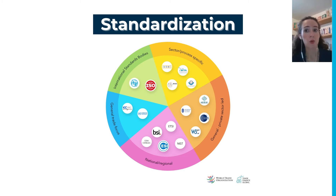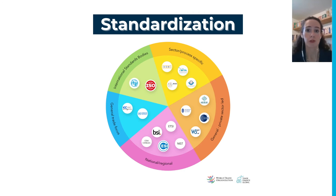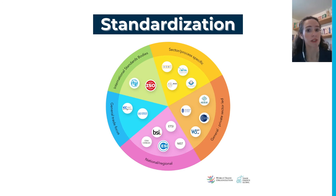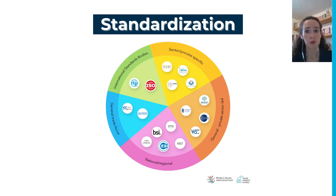A new section on standardization initiatives was also added in this year's publication. This section provides an overview of projects that work towards creating digital standards relevant for trade to drive digital interoperability. These standardization initiatives play a crucial role in shaping the future of trade digitalization. End-to-end trade digitalization can only happen if an ecosystem that allows for seamless exchanges of data between existing platforms is in place, and this requires developing and implementing globally accepted digital standards for trade. There are several initiatives in the broader trade area working towards creating a set of standards — some focused on particular sectors or geographies, others more general; some spearheaded by large international organizations, others by private companies. The graph on screen provides an overview of key standardization initiatives, and the study includes a short explanation of each individual project.